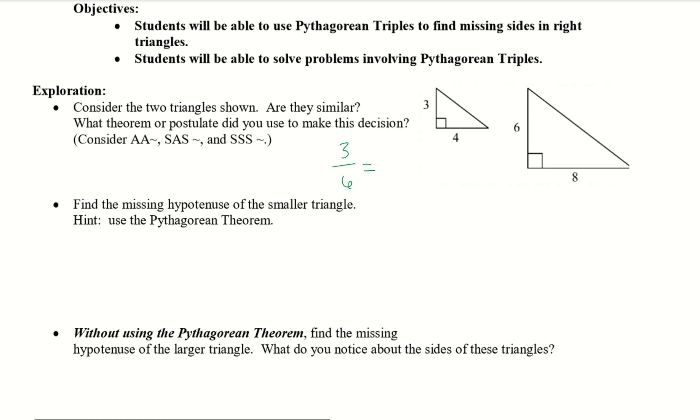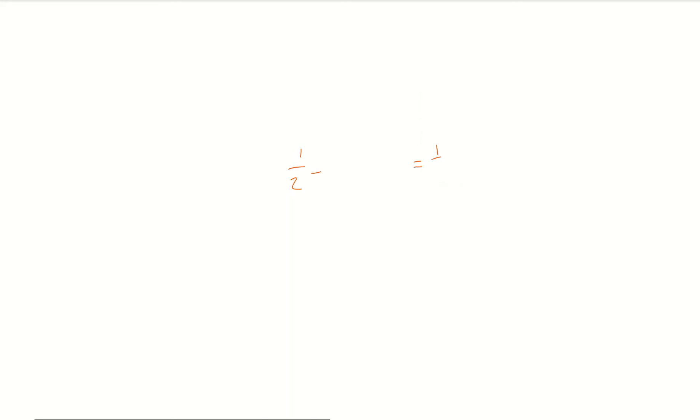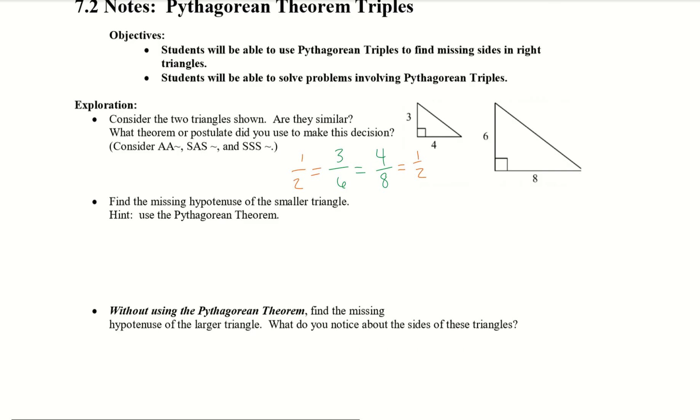So I have 3 over 6 should equal 4 over 8. If I go ahead and simplify those, I would get 1 over 2 is equal to 1 over 2. So perfect. They each equal 1 half. So those are proportional. If we take a look, we have a side, an angle, and a side. So therefore, I can prove these similar by side, angle, side.